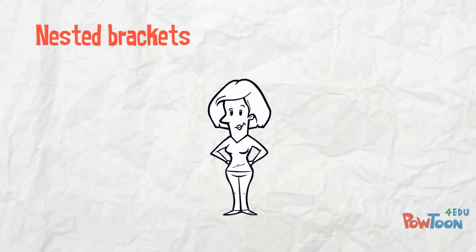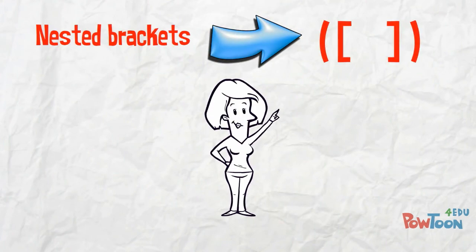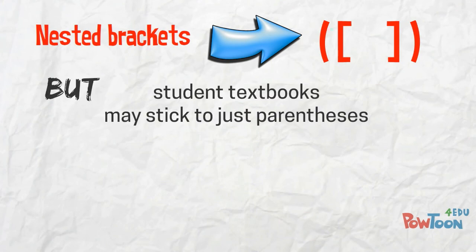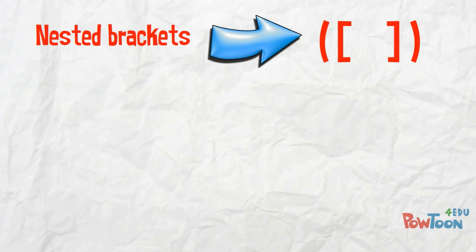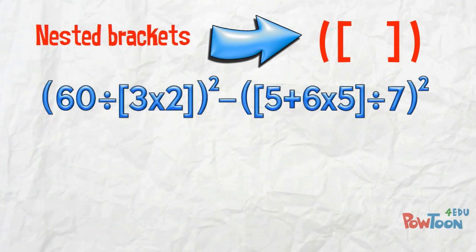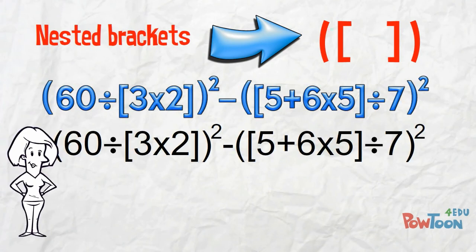I just demonstrated nested brackets by using different kinds of brackets because it helps you to see the priority items more easily, the center brackets and their contents. But student textbooks may stick to just using parentheses. Look again! Here's what we started with before I colored up the inner brackets. And if I show it in textbook black ink, here it is again!